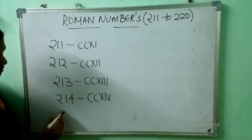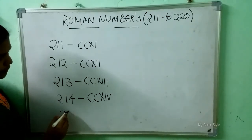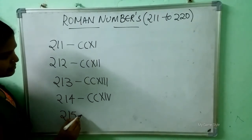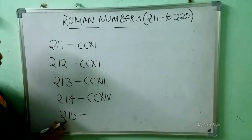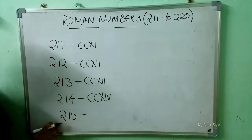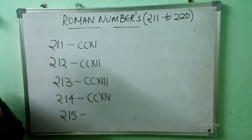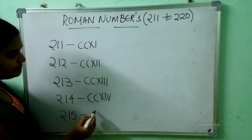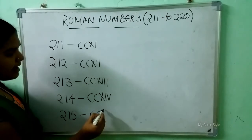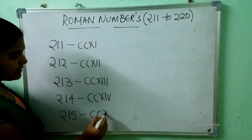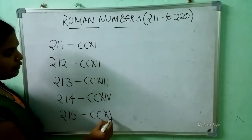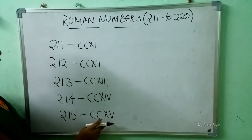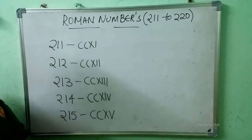After 214 comes 215. So how to write 215 here? Double C, X, V. It means 215.